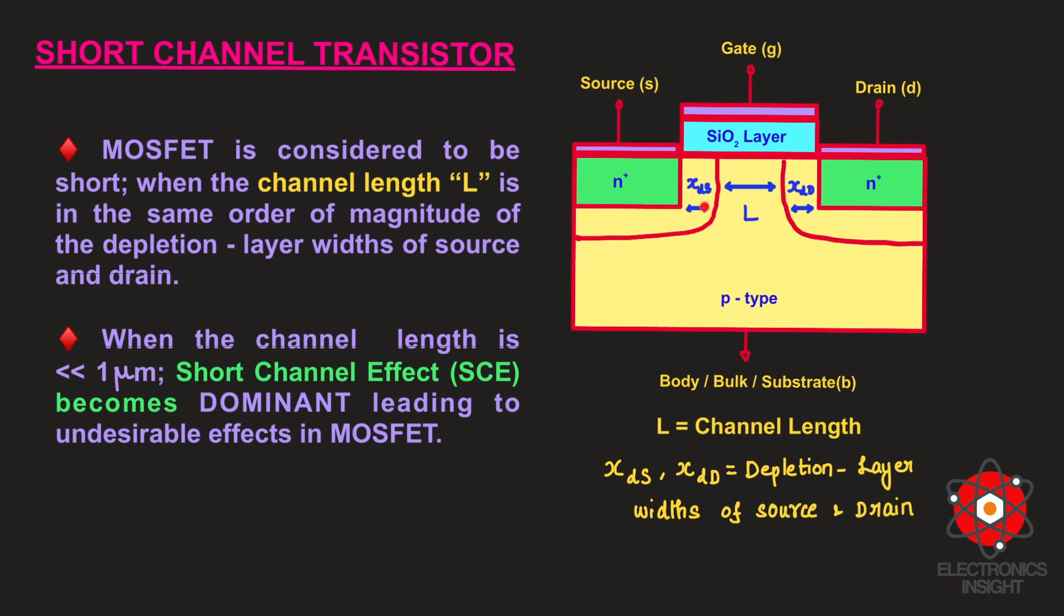In between the depletion regions or at the boundaries of source and drain depletion regions, we have the channel length that is denoted by capital L. When the summation of both the drain depletion region width is in the same order of magnitude of the channel length, then you call the MOS transistor as a short channel MOSFET.